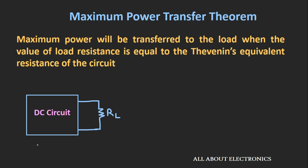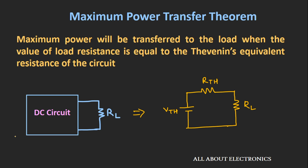Let's say we have one DC circuit in which the load resistance RL is connected. Using Thevenin's theorem, we can convert any DC circuit into an equivalent Thevenin's voltage source in series with the equivalent Thevenin's resistance. For the given circuit, the maximum amount of power will get transferred to the load RL when the value of RL is equal to the Thevenin's equivalent resistance RTH. Now let's prove mathematically that maximum power transfer occurs when RL equals RTH.